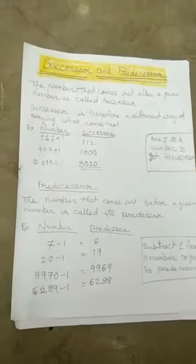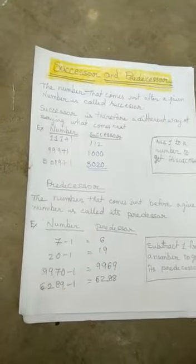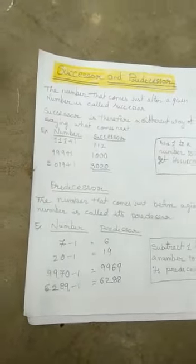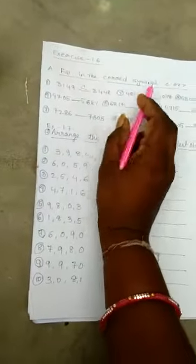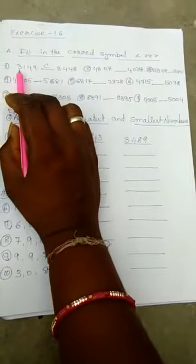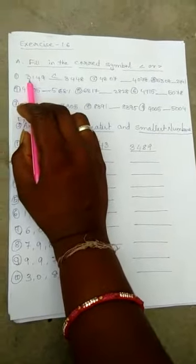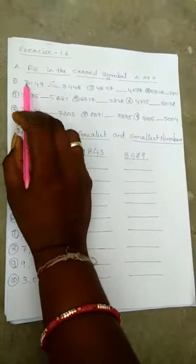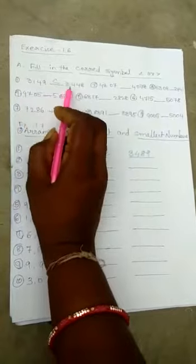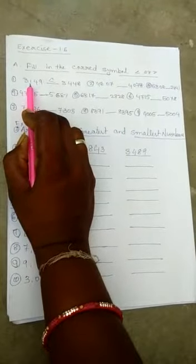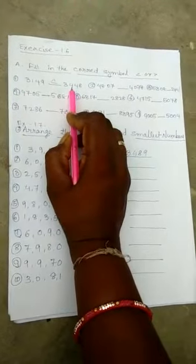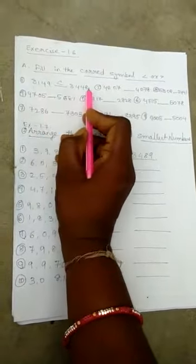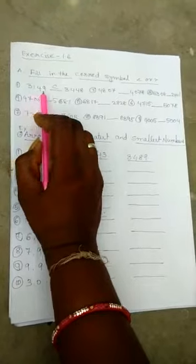Okay children, you have learned. Now I have given some questions for you. Fill in the correct symbols — greater than or less than. For example: 3149 and 3440. First compare how many digits there are — equal digits. Thousands place: both 3000. Hundreds place: 1 versus 4. So 3440 is greater than 3149.